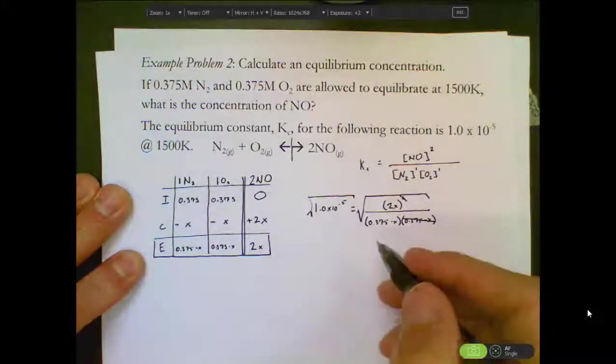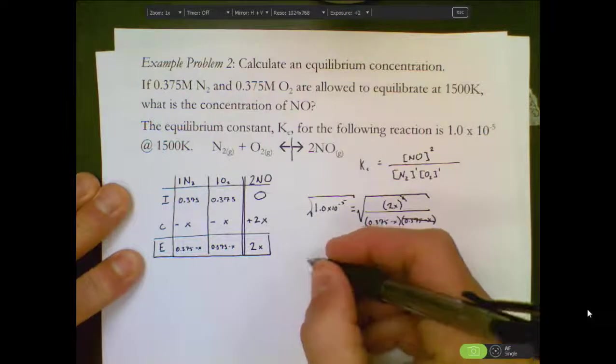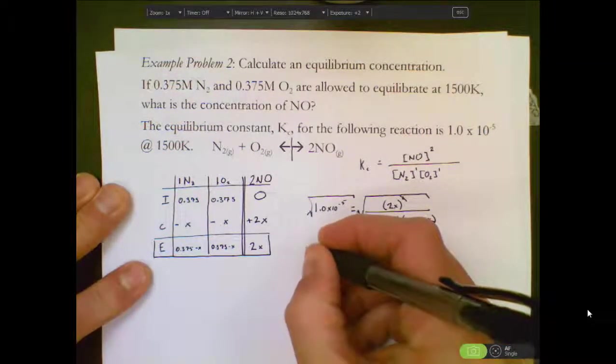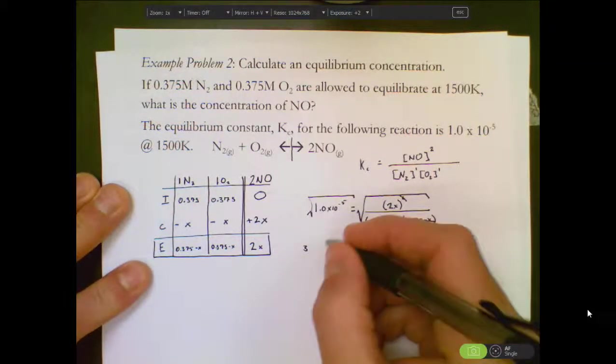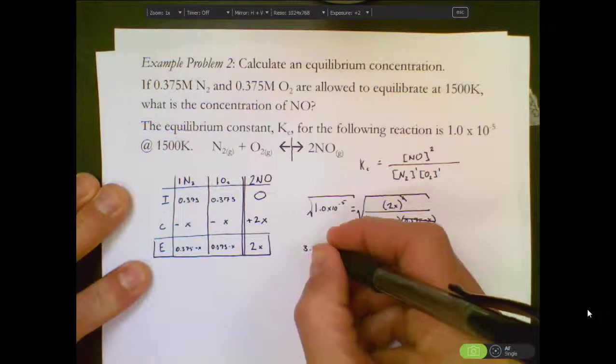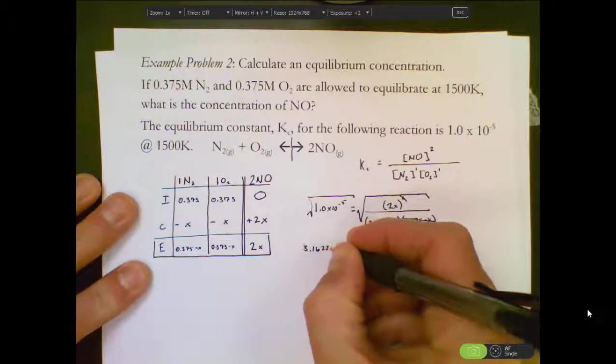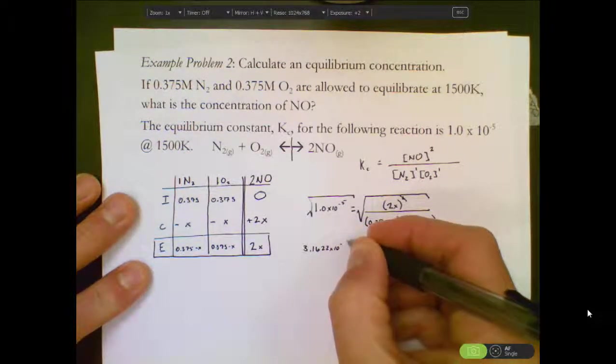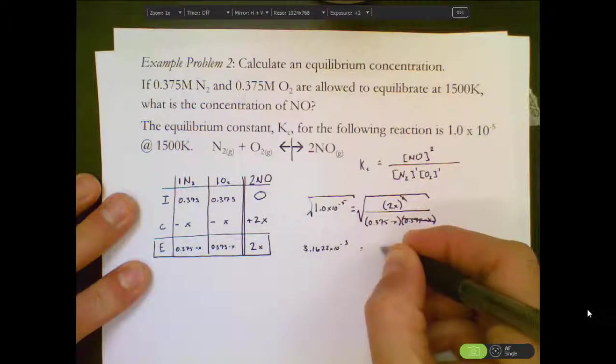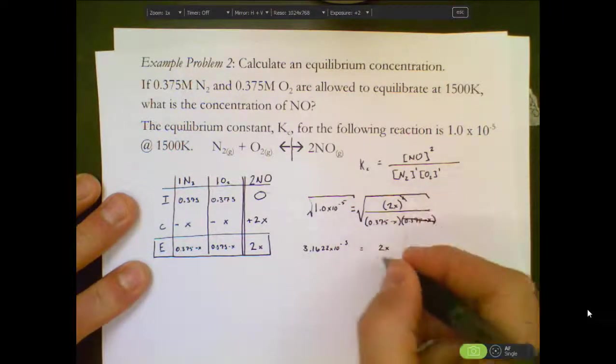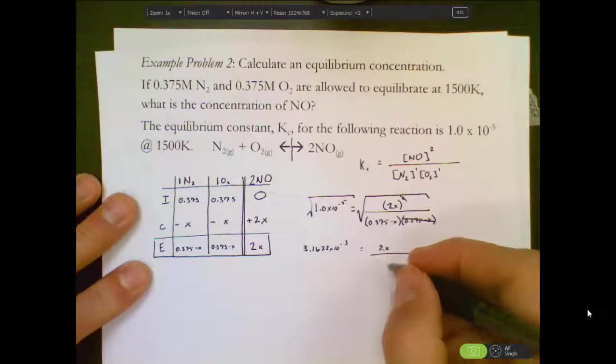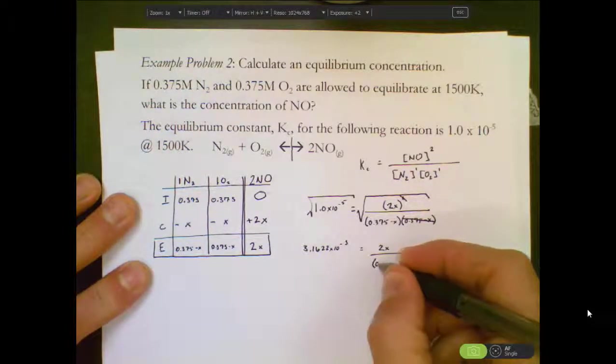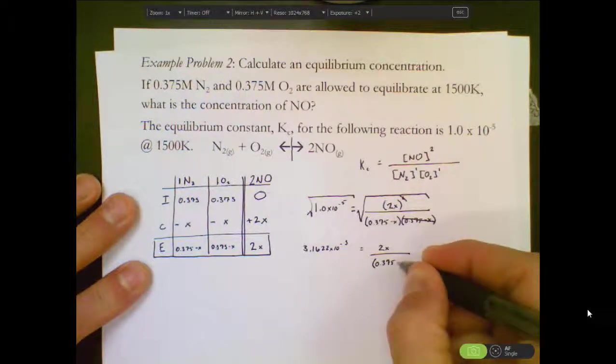With this other math trick though, using the square root, I'm going to be left with the square root of 1 times 10 to the negative 5th is 3.1622 times 10 to the negative 3rd. And that's going to be equal to 2X, because the square dropped, over 0.375 minus X.